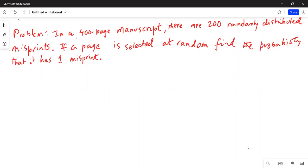In a 400-page manuscript, there are 200 randomly distributed misprints. If a page is selected at random, find the probability that it has one misprint.